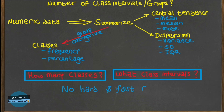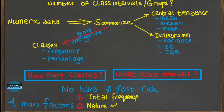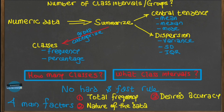Although there are no hard and fast rules, the choice about the number of classes mainly depends upon four major factors: the total frequency, meaning the total number of data points; the nature of the data, meaning how large the values are and how spread out they are from each other; the level of accuracy that the researcher is aiming for; and finally, the ease of computing other statistical measures.